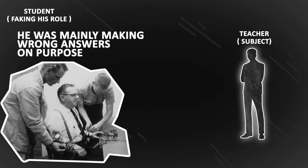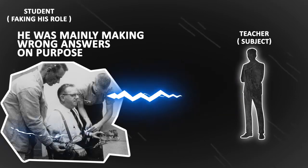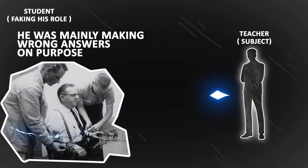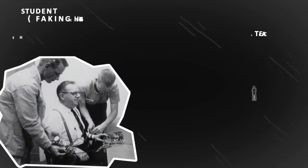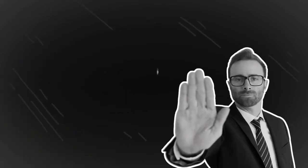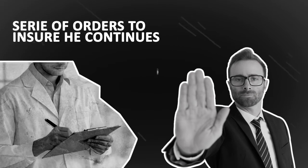The student was instructed to mainly give the wrong answers, and for each of these wrong answers, the teacher gave an electric shock. If the teacher refused to administer an electric shock, the experimenter would give a series of orders to ensure that they would continue. There were four orders, and if one of them was not obeyed, then the experimenter would read out loud the next order, and so on.